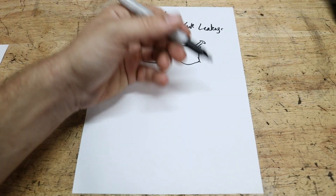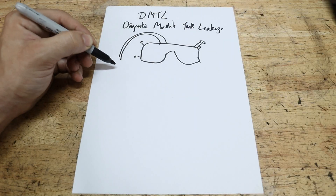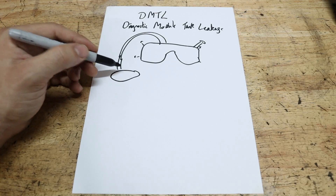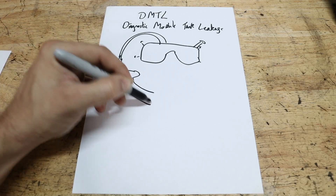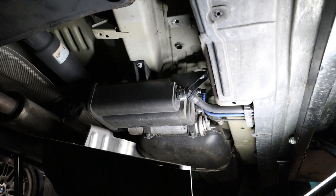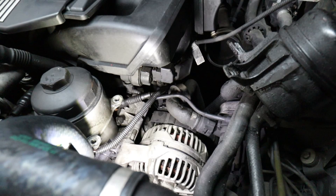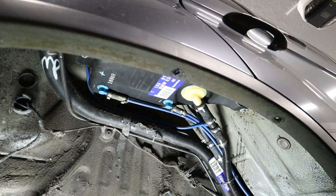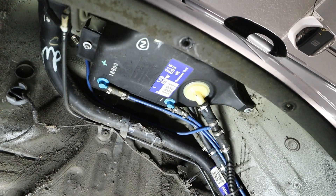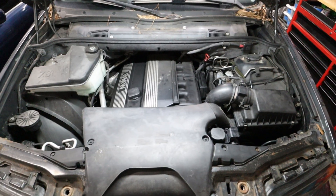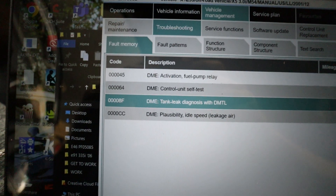Hey everybody, welcome back to the Beamer Barn. Today I'm going to explain how the DMTL system works on your BMW. We're going to go through component by component and why you might have a fault on your dashboard, and then diagnose my BMW X5 to see why my system has failed and I have a check engine light.